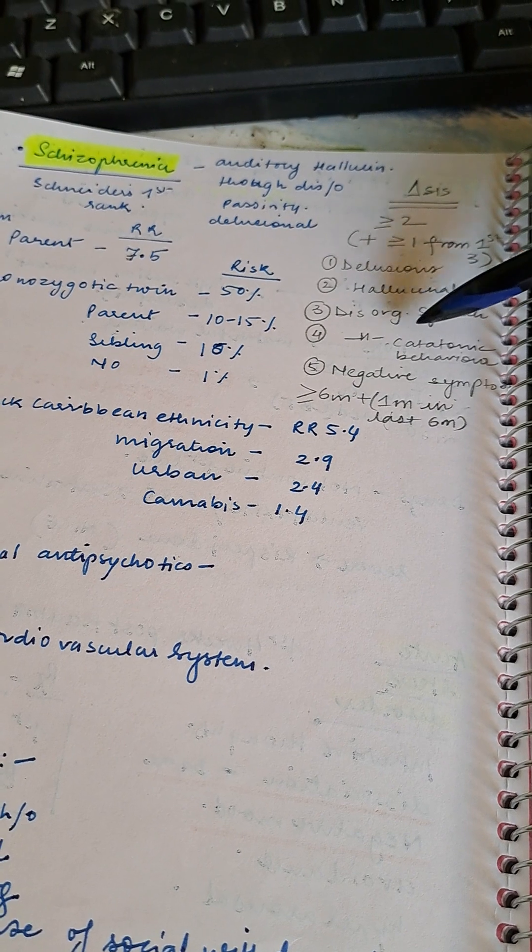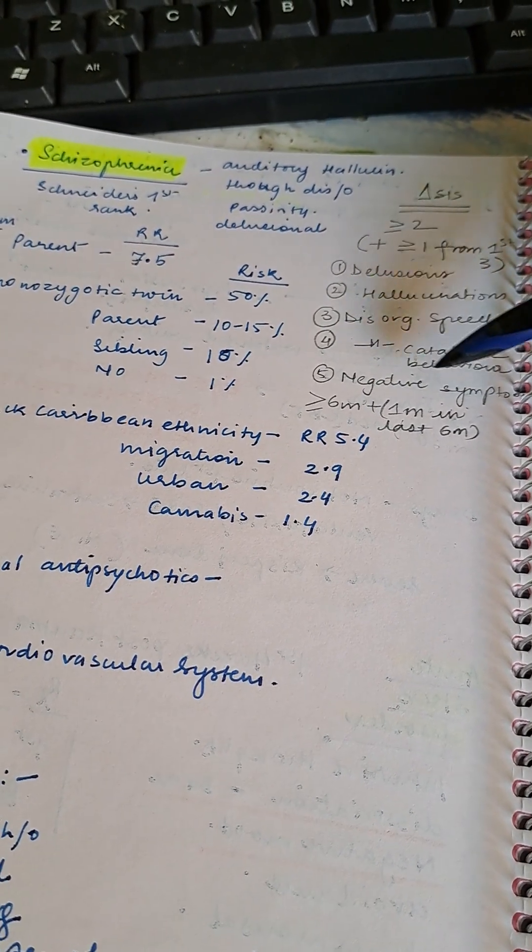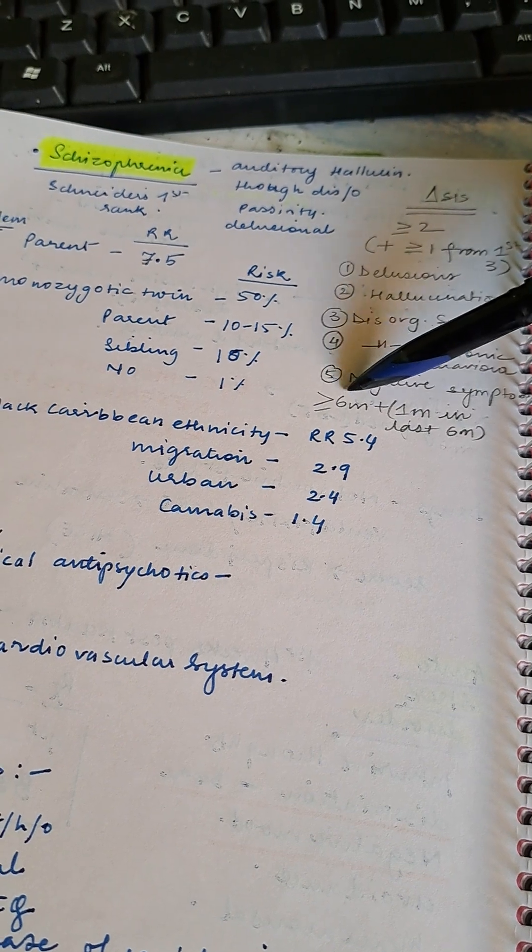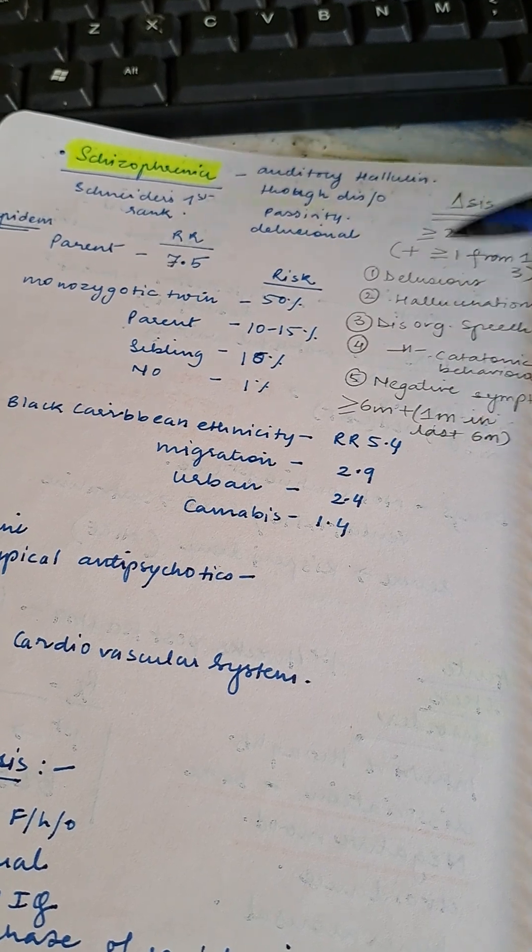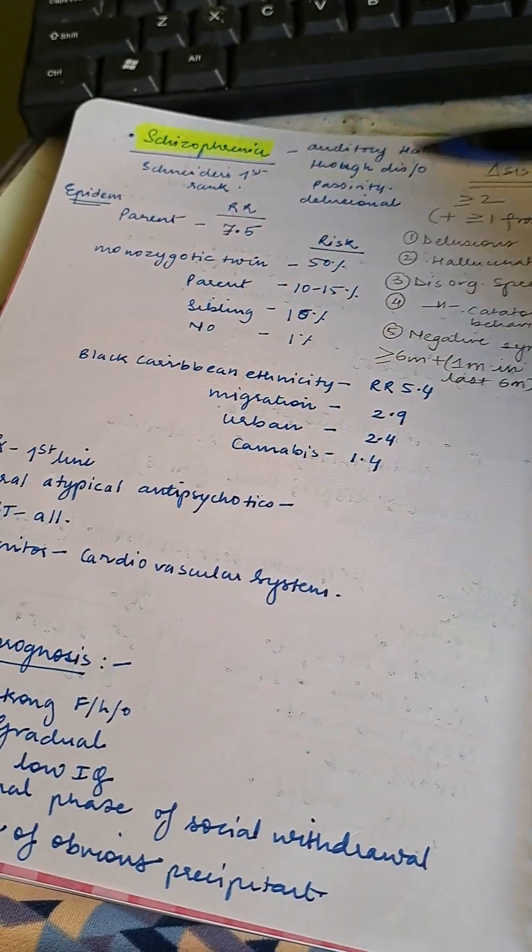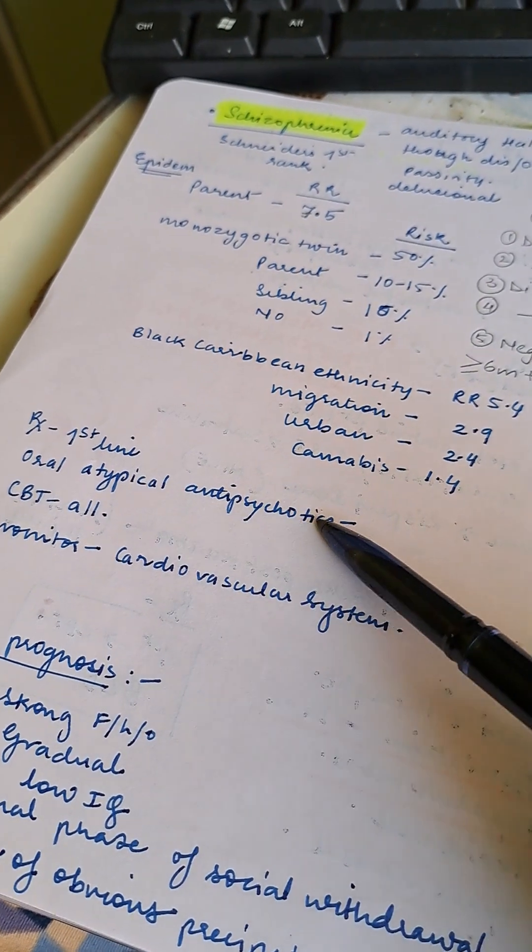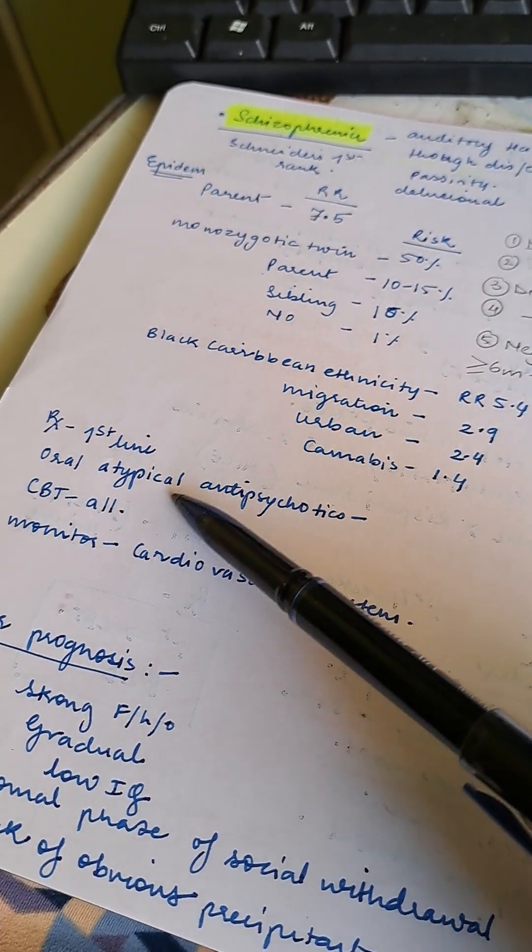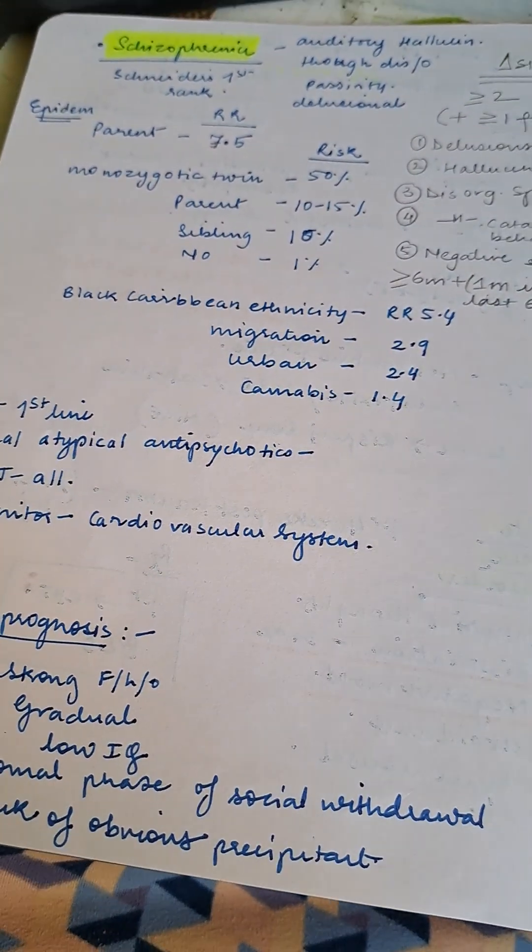Additionally, catatonic behavior or negative symptoms should be present for more than six months, with one month active in the last six months. First-line treatment is oral atypical antipsychotics. Do CBT in all patients with schizophrenia. Monitor cardiovascular symptoms.